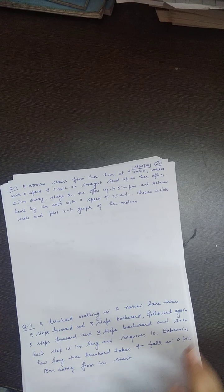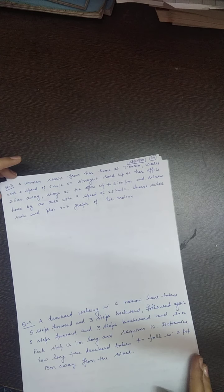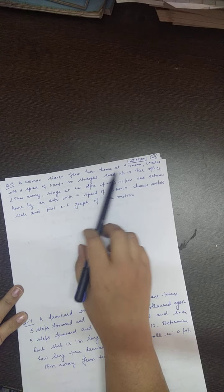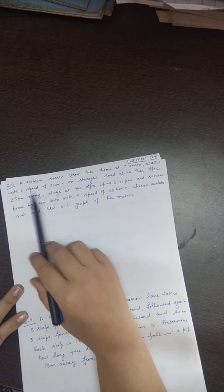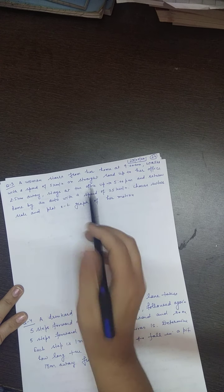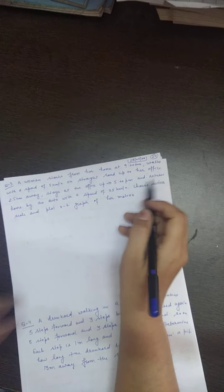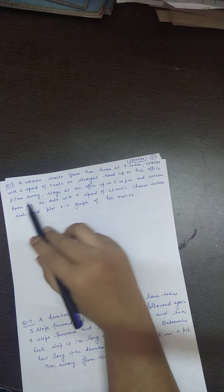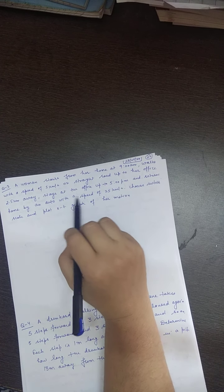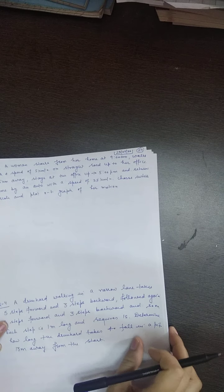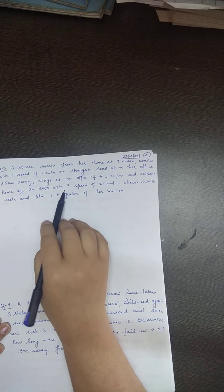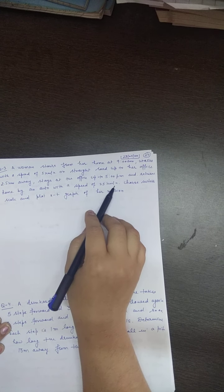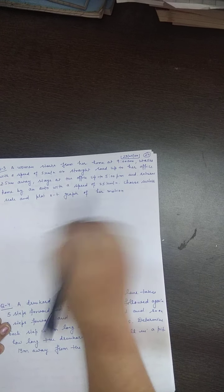Okay students, now we are discussing the next question. A woman starts from her home at 9 AM, walks with a speed of 5 km per hour on a straight road up to her office 2.5 km away, stays at the office up to 5 PM, and returns home by an auto with a speed of 25 km per hour.